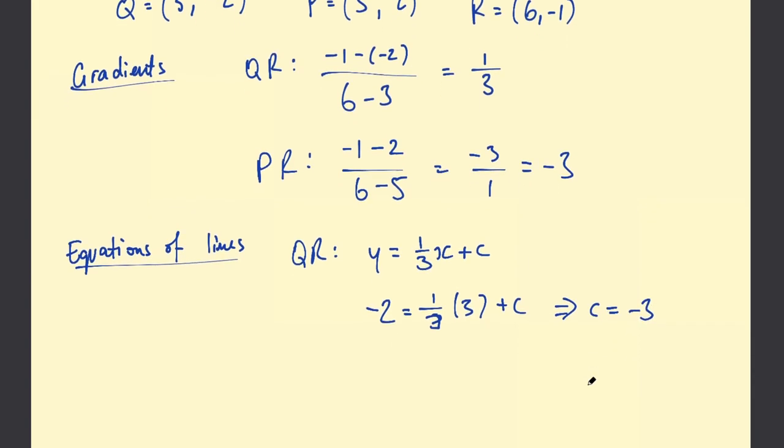And for PR, we've got y = -3x + c. Using (5,2) we can say 2 = -3×5 + c. So c equals 2+15 which is 17.